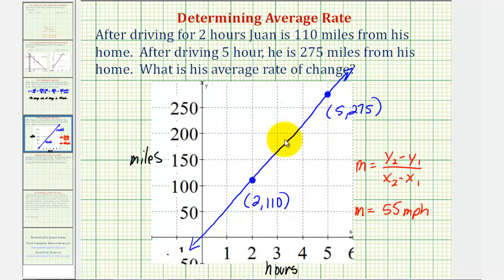So even though we found the average rate of change, if we compare the time and distance throughout the trip, his actual trip might have looked something like this, where he drove faster and slower throughout the trip.